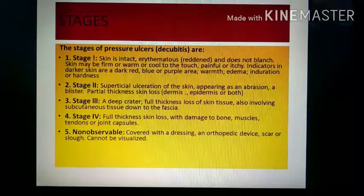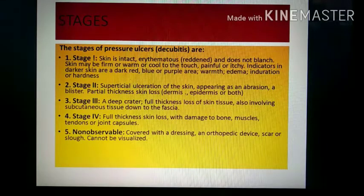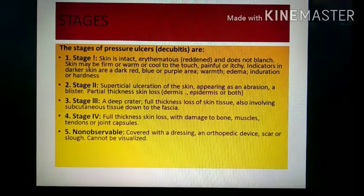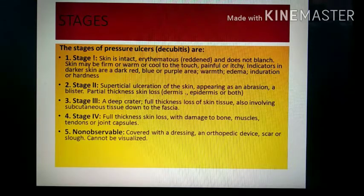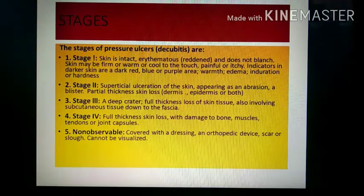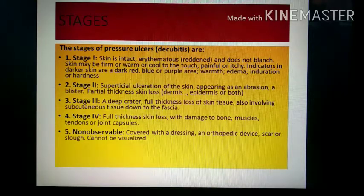The stages of decubitus ulcer are stage 1, 2, 3, and 4. In stage 1, the skin is intact. There is no skin breakdown, but there will be erythema — redness — that does not blanch. Blanch means discoloration or pale colour. The skin may be firm and warm, or it can be hard, cool to touch. It can be painful and itchy.